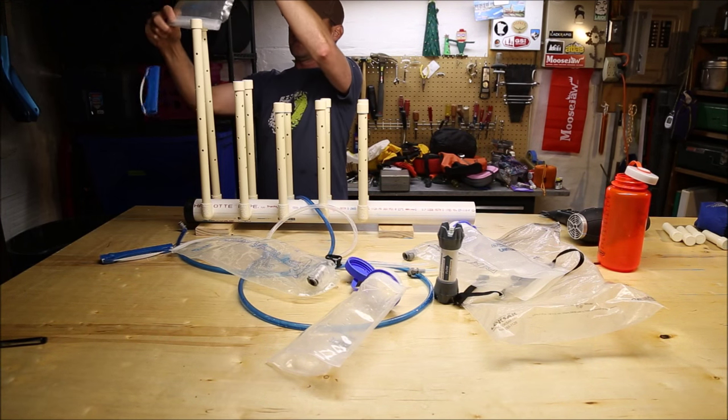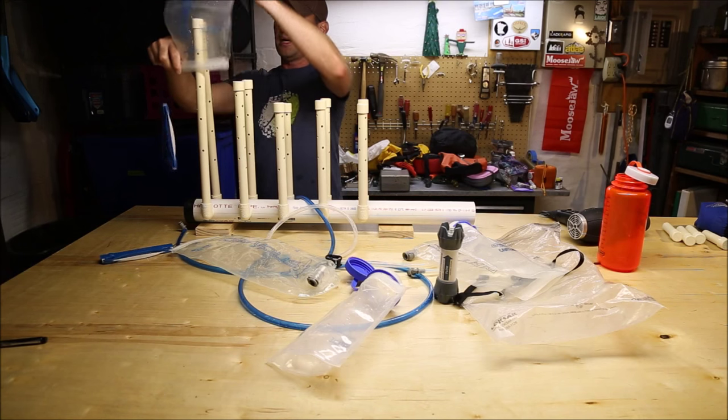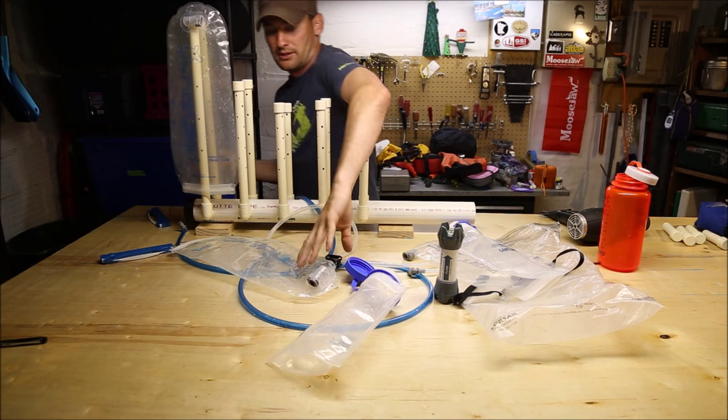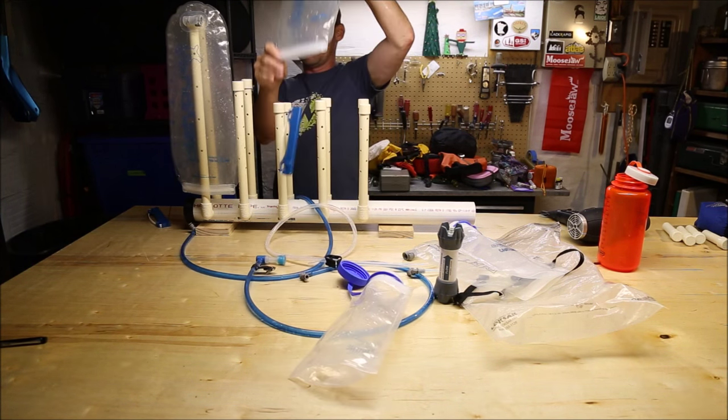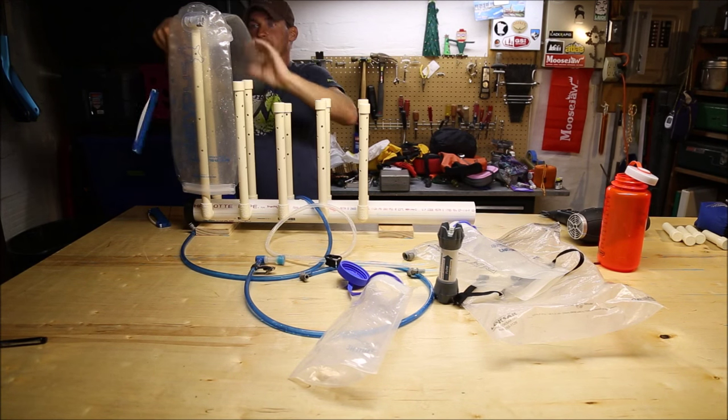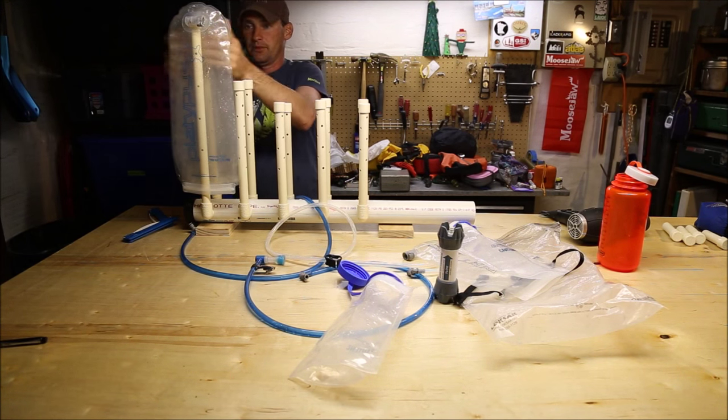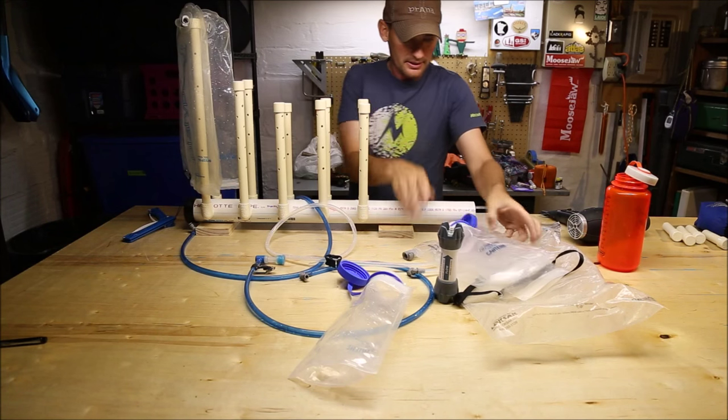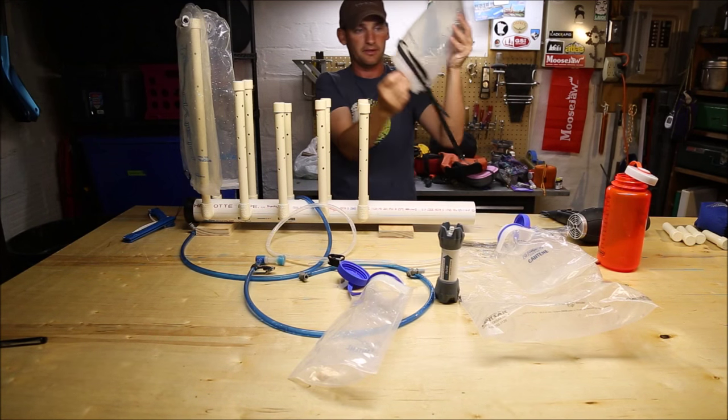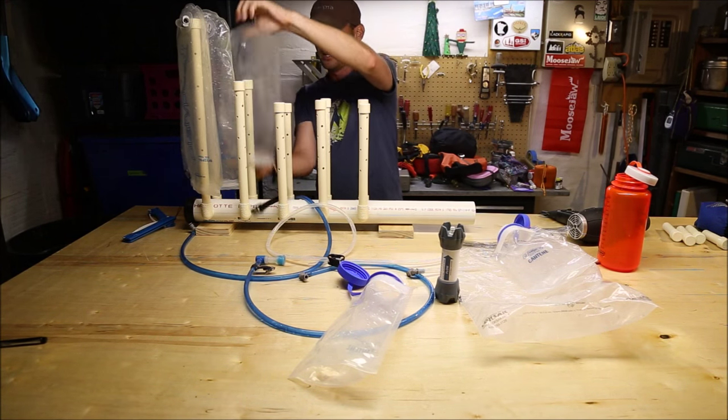As you can see these just slip over the top. These are the Platypus, these are my 100 ounce bags that I use. These are all washed up and will go on like that. This one is for the filtration system, that one can go here.